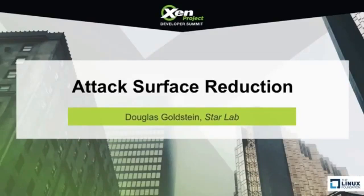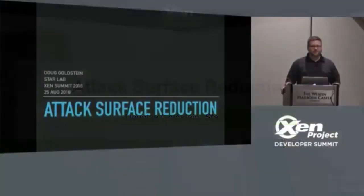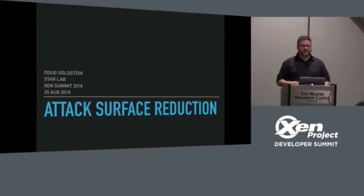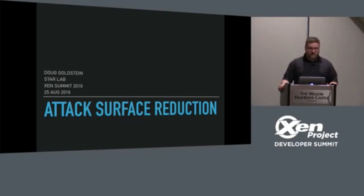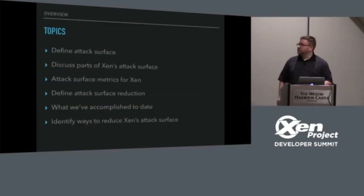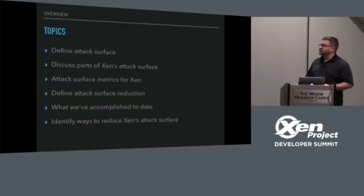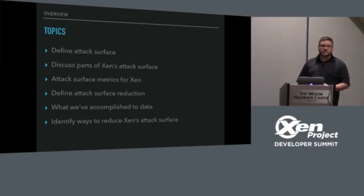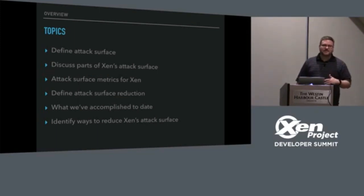We're about two minutes after the window. I figured some of the talks ran over, so I figured I'd wait a minute or two. Talking about attack surface reduction. I'm going to do some basics and define the attack surface, talk about some parts of Xen's attack surface from a high level. A 30-minute window doesn't really give you time to dive down into specifics, so I'm trying to keep it more high level.